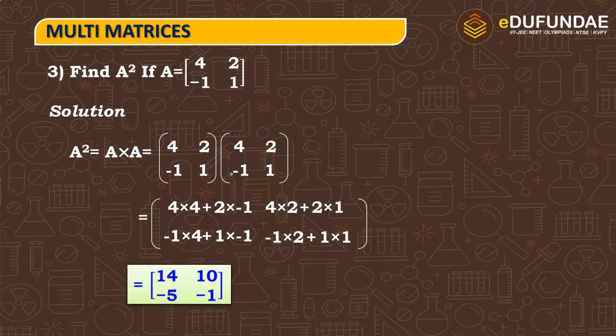So, after solving it, we will get 4 into 4 is 16 minus 2, 14, 4 into 8 plus 2, 10, minus 4 minus 1, minus 5, minus 2 plus 1, minus 1. So, here, there is A square value which we find out. Let's move forward.